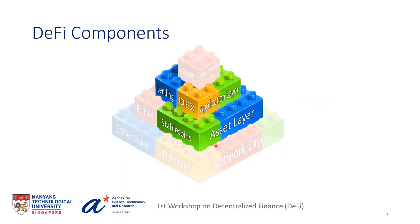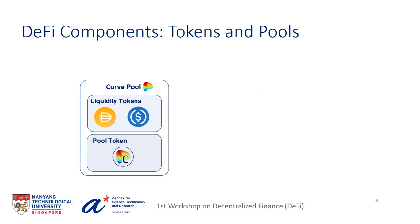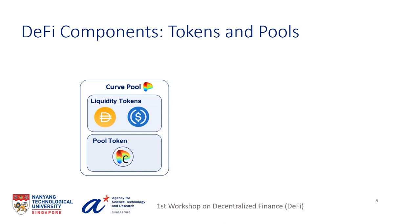In this work we focus on the middle two layers of the Lego pyramid: stablecoins and other tokens, as well as lending protocols and decentralized exchanges. Here is a decentralized exchange that enables instant trading between stablecoins. Stablecoins, as well as other tokens, are smart contracts implemented according to a standard, usually ERC-20. Another key component of the decentralized exchange is a pool — a smart contract that aggregates tokens of one or more types. These tokens are often referred to as liquidity, since they facilitate the operation of the exchange.